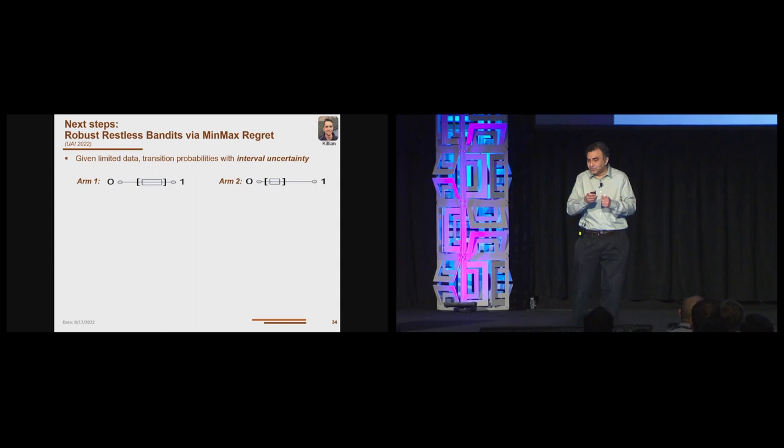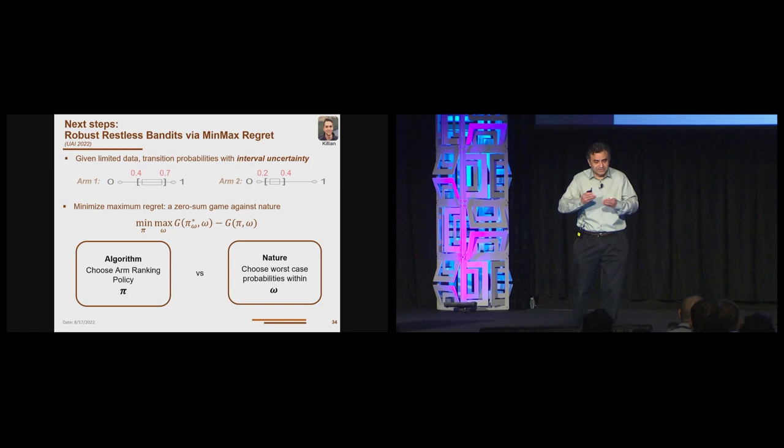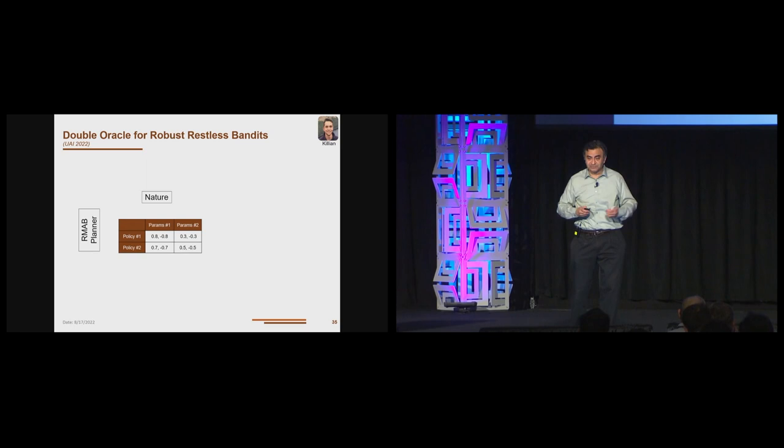Decision focused learning directly modifies the loss function to maximize decision quality. What this means is you learn a linear regressor which clearly has low learning accuracy but has much higher decision quality. Here we have a two-stage approach. Basically the gradient descent is just trying to maximize predictive accuracy. In decision focused learning gradient descent is actually trying to directly maximize decision quality. Given these intervals then we can approach this problem as a robust restless bandit problem to minimize maximum regret.